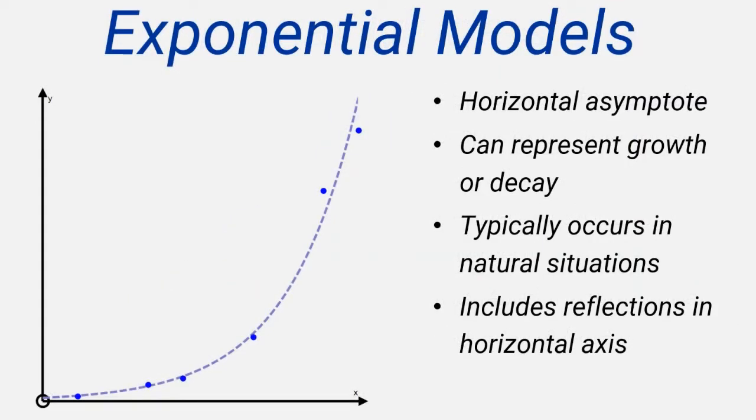Another common type of model is the exponential model, which occurs in many forms and is typically appropriate for naturally occurring data, although economic and socio-economic data will often produce exponential models.